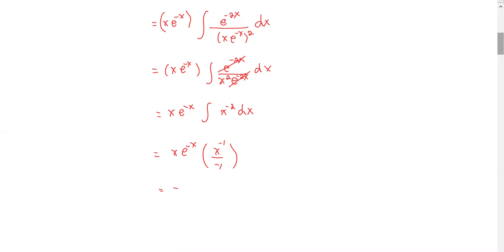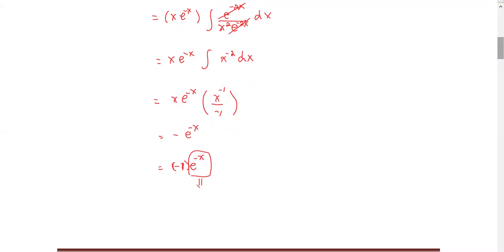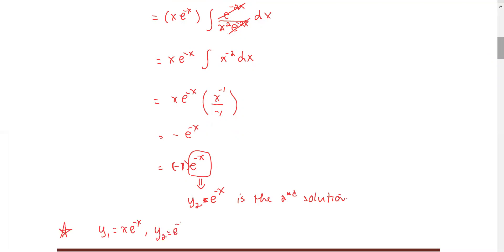Integrating x^(−2) gives x^(−1)/(−1). We ignore the constant of integration because we are looking for a member of the fundamental set of solutions. This simplifies to −e^(−x). As noted in Section 4.1, a constant multiple of a solution is also a solution, so we disregard the constant −1. Therefore, the second solution is y2 = e^(−x).